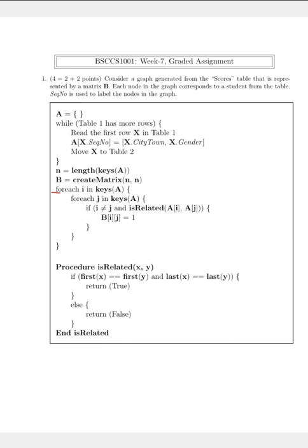For each I in the keys of A and for each J in the keys of A — since the keys of A correspond to N, that is the number of rows and columns — we are basically iterating through the rows and columns of this particular matrix.